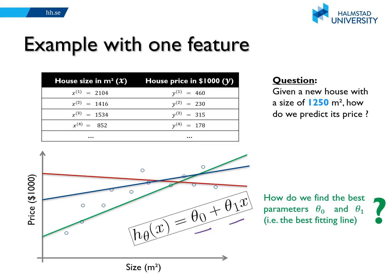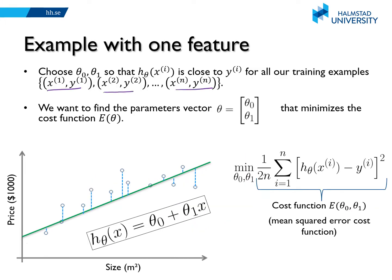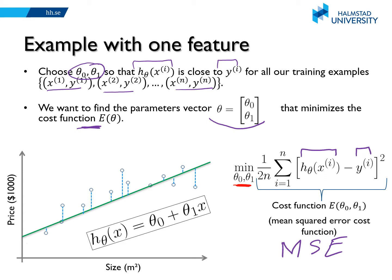By varying the values of theta 0 and theta 1, we get a different line. The training part means that we want to find the values for the parameters theta 0 and theta 1 that gives us the best fit line. We can try to find the parameter values that make our predicted output as close as possible to the true output — we want to find the parameters vector that minimizes some cost function. One cost function we talked about previously is the mean squared error cost function. If our predicted values are very different from the true values, then this cost will be very high. So we want to find the parameter values that give us the minimum possible value for this cost — the sum of those squared differences as small as possible.